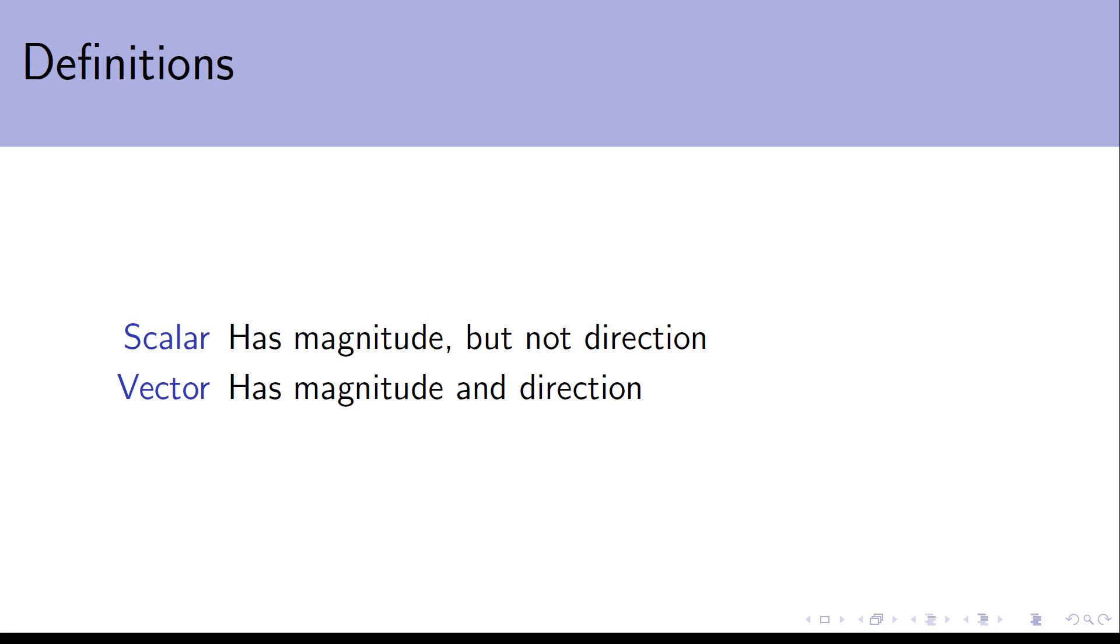So if we give an example, an example of a scalar might be mass. So I have, for example, a mass of 80 kilos or a book has a mass of a few hundred grams. But that mass doesn't act in any direction, it's just a property, it's just a magnitude. And so mass is a scalar.